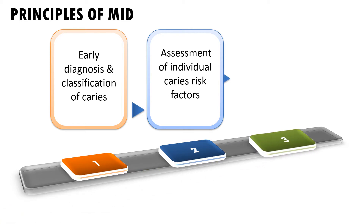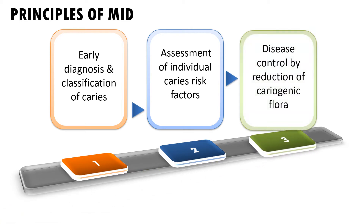The third principle is disease control by reduction of cariogenic flora — meaning eliminating the cause by fighting pathogenic microorganisms and reducing the frequency of sugar intake. The main causative microorganism is Streptococcus mutans. If we educate the patient to modify their diet and improve oral hygiene habits, the teeth will be less exposed to caries attack.